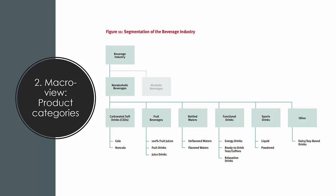Then we have functional drinks — a very important category from the perspective of growth and changes in the industry. This includes energy drinks like Monster and Red Bull, ready-to-drink teas and coffees such as Nestea and Lipton Ice Tea, often mixed with fruit flavorings, and relaxation drinks, which are in the same broad category as energy drinks and you'll often see them in the same supermarket area.